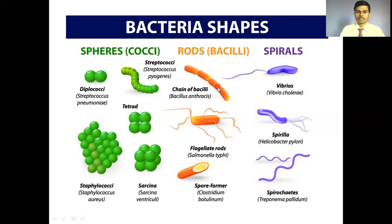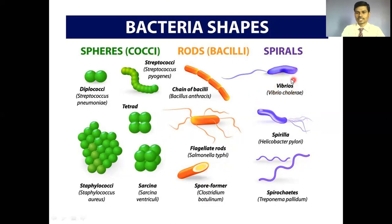Rod-shaped bacteria are called bacilli. If rod-shaped bacteria are present in a chain, they are also classified accordingly. Some bacilli show spore formation inside them; this character of spore formation particularly occurs during reproduction in the bacterial cell. The comma-shaped bacterial cell is named vibrio, and some bacteria are spirilla or ribbon-shaped.